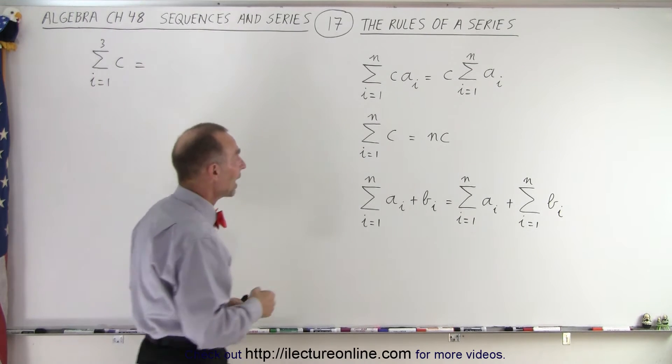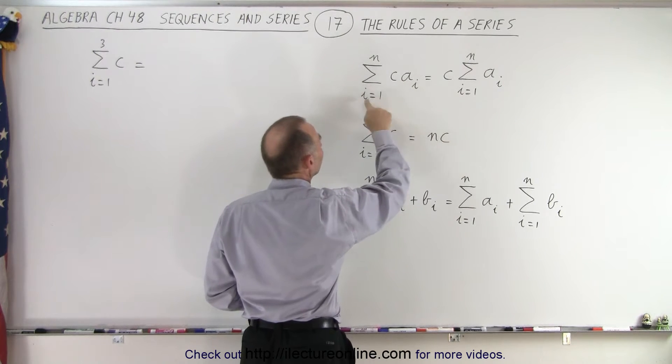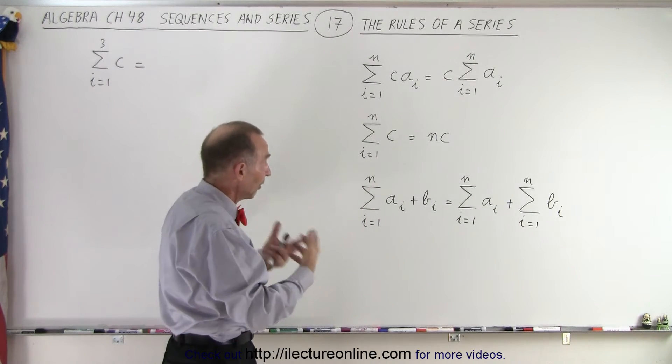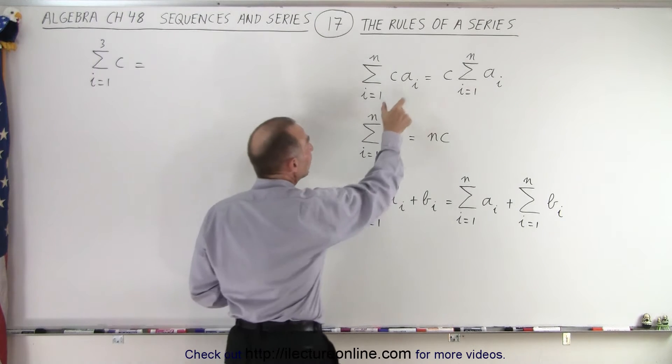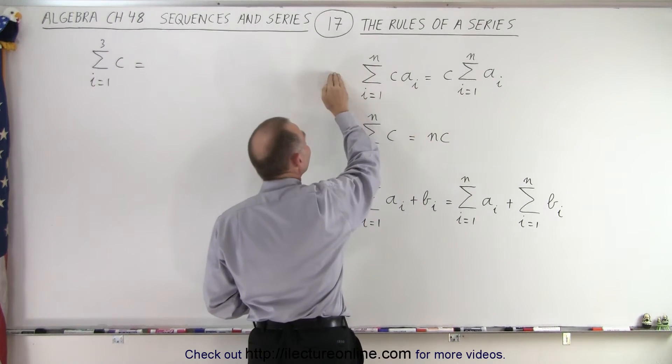So let's say that we have a constant c multiplied times a sub i and i changes from 1 to n. Of course n can be any number and represents the number of terms you're going to end up with. But it turns out since each term is going to be multiplied by c, we could simply take the c out.